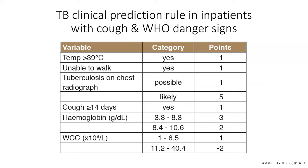We then developed a TB clinical prediction rule for inpatients, similar to the PCP model but with more patients. Our reference standard was TB culture — we cultured these patients to the nth degree: two sputum cultures, blood cultures, and anything that looked extra-pulmonary. We converted odds ratios into a simple point-scoring system. Notably, none of the WHO symptom-screen variables survived multivariable analysis — not one. Among the danger signs, two did predict TB but not very strongly.